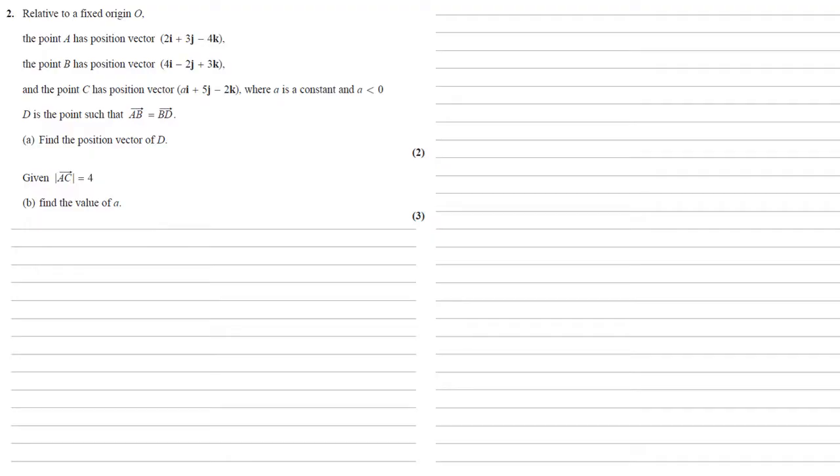Point C has position vector ai plus 5j minus 2k, where a is a constant smaller than zero.